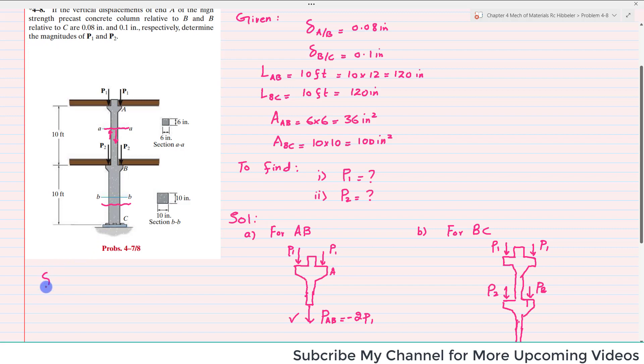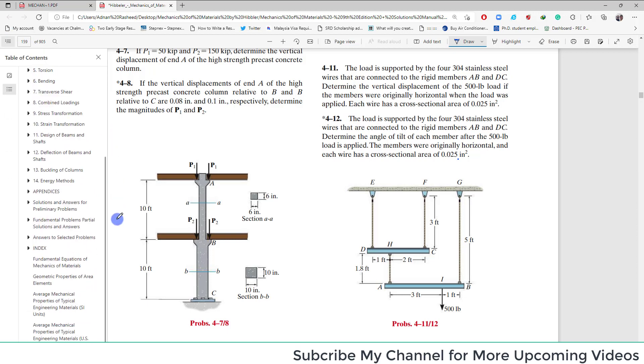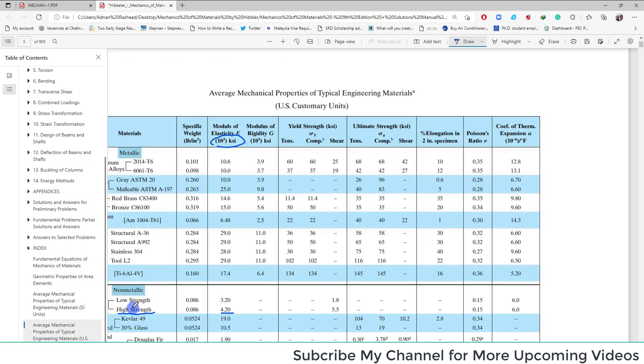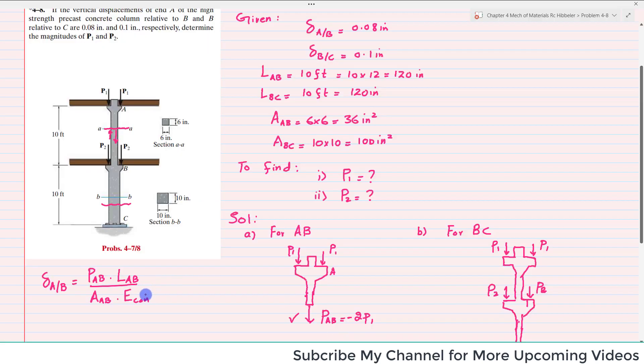As it is given that displacement of point A with respect to point B is given, and that is equal to PAB into LAB divided by area of AB into E of concrete. E of concrete is not available. That will be taken from the book. This value is available at the end of the book. I will show you the average mechanical property of typical engineering material, U.S. customary.